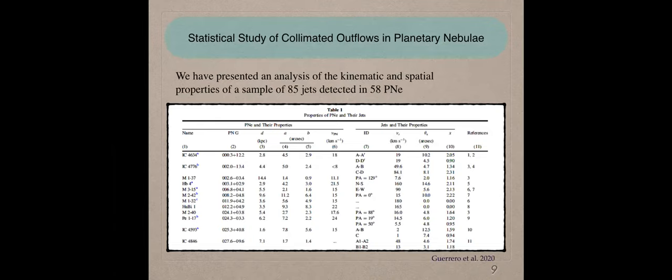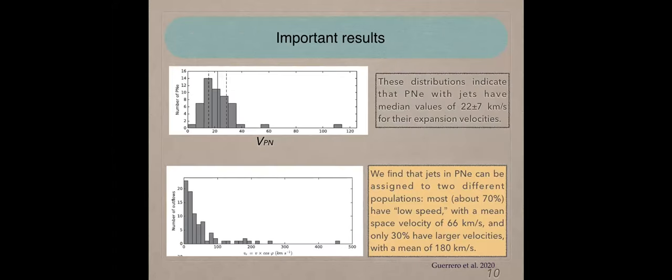The other work that I did in my first postdoc was a statistical study of collimated outflow in planetary nebulae. I did a kinematic study. We have presented an analysis of the kinematic and spatial property of a sample of 85 jets detected in 558 planetary nebulae. In this work, I searched in the literature for recorded radial velocity. From the literature, I got the distance, the angular size, the different velocity, etc.